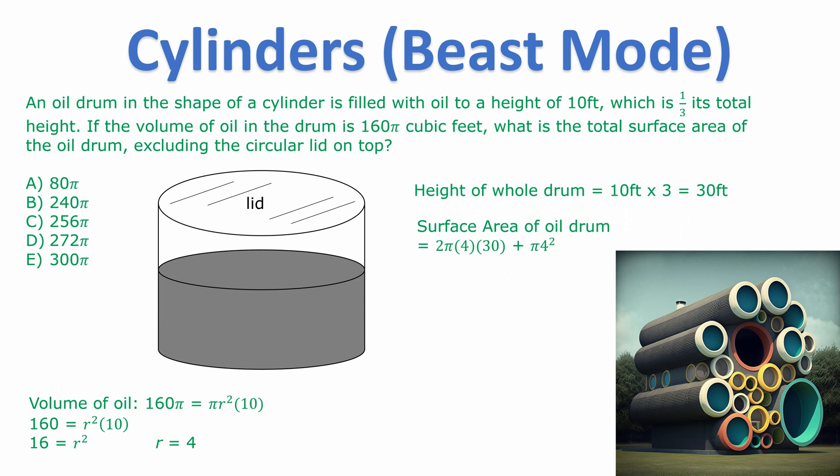We are excluding, we are not including the circular lid on top. That's why I didn't want you to memorize the formula. Every question might be different. Anyway calculating this you get 240π plus 16π which is 256π. Answer C again.